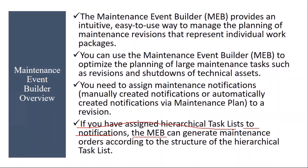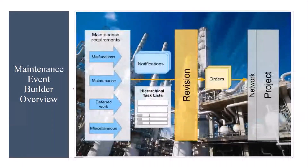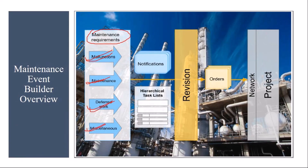MEB can generate maintenance orders according to the structure of the hierarchical task list. So here we will be creating a hierarchical task list, which you will assign to the notification, and then MEB will generate orders according to that structure of the task list. Maintenance requirements come in the form of notifications — whether it's a malfunction, a pending activity, deferred work, or any miscellaneous maintenance. All these requirements come as notifications, and for each notification you assign a hierarchical task list. These notifications are then assigned to the revision, and from the revision you create orders using MEB.